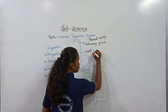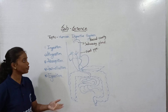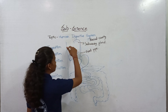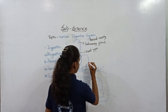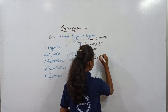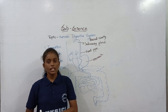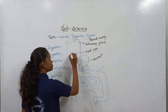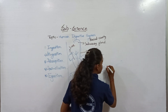The food pipe is also called the esophagus. The food travels through the food pipe and reaches the stomach.